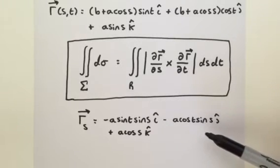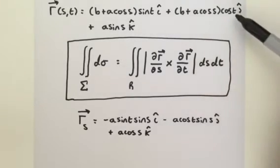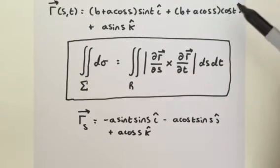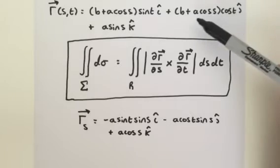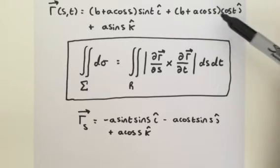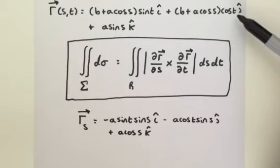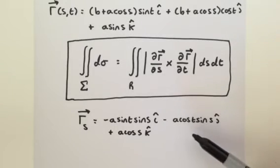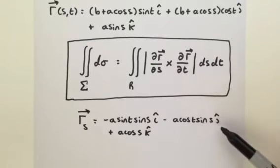Then for our y component, it's very similar. Cosine of t times b is just a constant that completely disappears. So we need to partially differentiate a cosine of s times the cosine of t with respect to s, and we're going to get minus a cosine of t sine of s j.